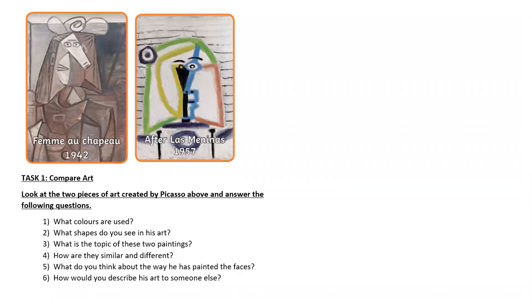Task one: compare art. Look at the two pieces of art created by Picasso above and answer the following questions. Number one: what colours are used? Number two: what shapes do you see in his art? Number three: what is the topic of these two paintings? Number four: how are they similar and different? Number five: what do you think about the way he's painted the faces? Number six: how would you describe his art to someone else? Pause the video, get a pencil and piece of paper, and write your ideas on these six questions.